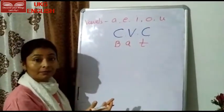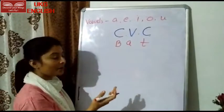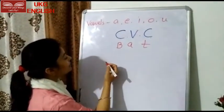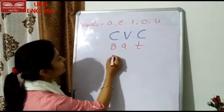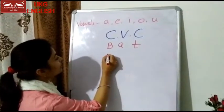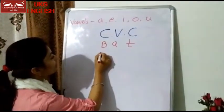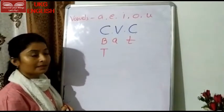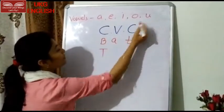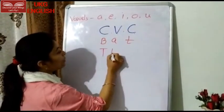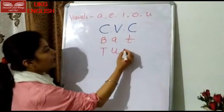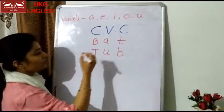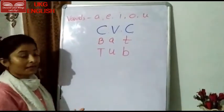One more — I will take the letter T — consonant, U — vowel, and T — consonant. So which word is formed? TUT.